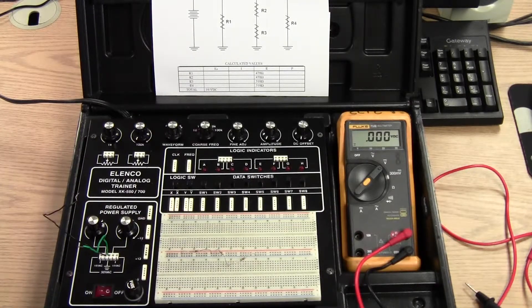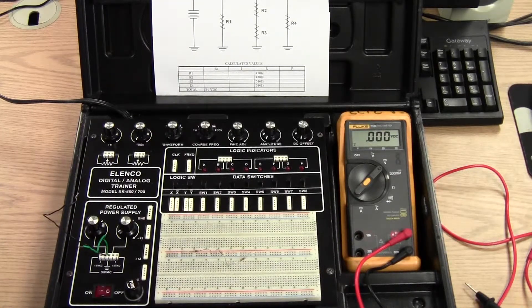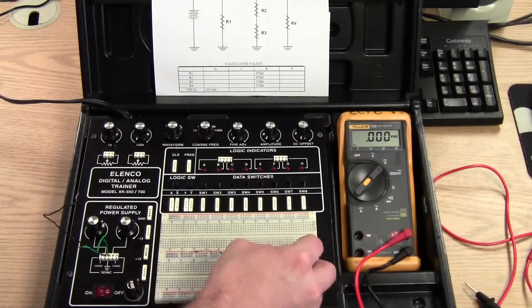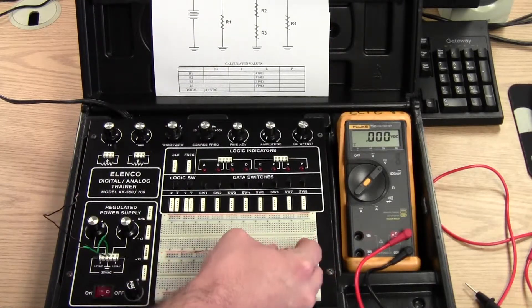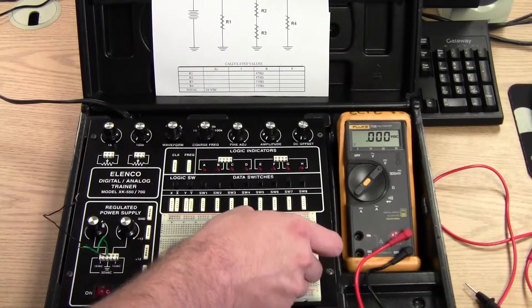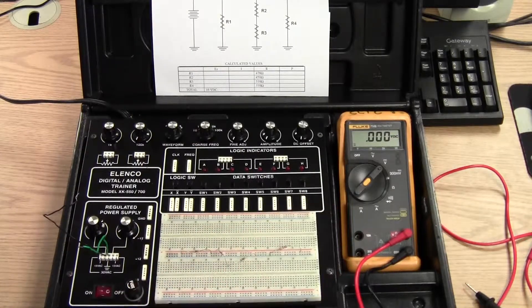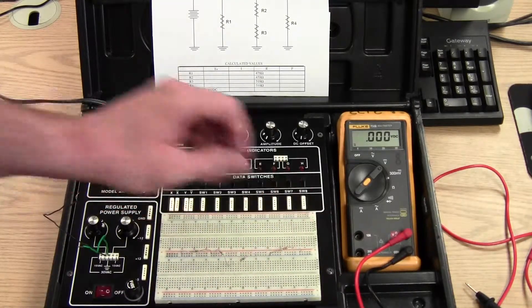And then our final resistor R4 is just in parallel with everything else. So I'm going to put one end from the positive strip and the other end in the negative strip.